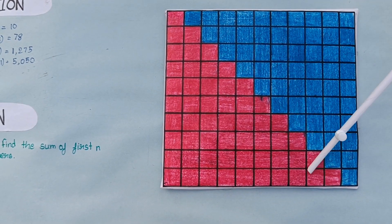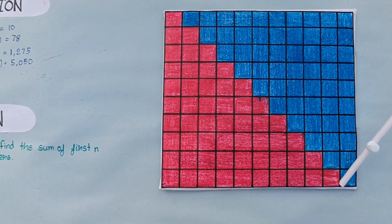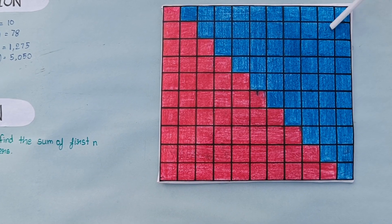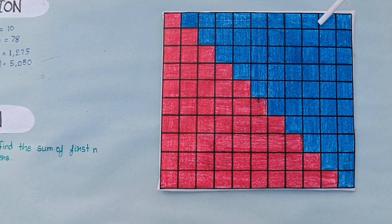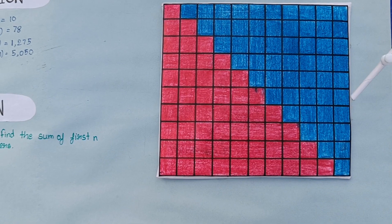To find the sum of these boxes add same stair with the same number of boxes inversely. This forms a rectangle.